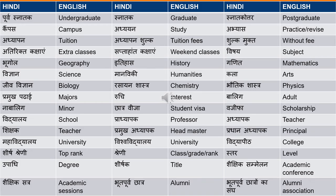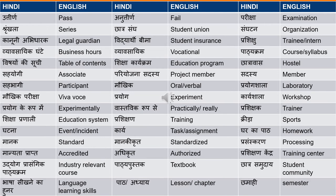'Shaikshik sammelan' means academic conference — a conference is 'sammelan' and academic is 'shaikshik'. 'Shaikshik satra' means academic session — session is 'satra'. 'Bhootpurva chatra' means alumni, and 'bhootpurva chatron ka sang' means alumni association. 'Uttirn' means pass, 'anuttirn' means fail. 'Pariksha' means examination. 'Shrinkla' means series. 'Chatrasang' means student union — this is very important. 'Sanghatan' means organization. 'Kanuni abhidharak' means legal guardian — in dialogues where a minor wants to enroll in a course, the legal guardian must take ownership, and that is 'kanuni abhidharak'.